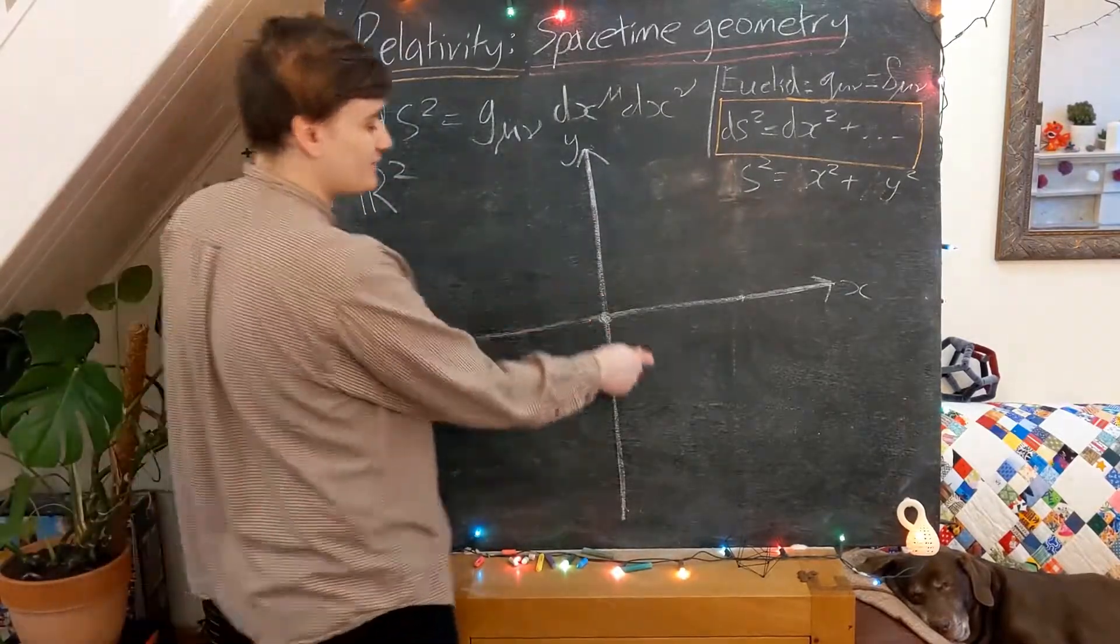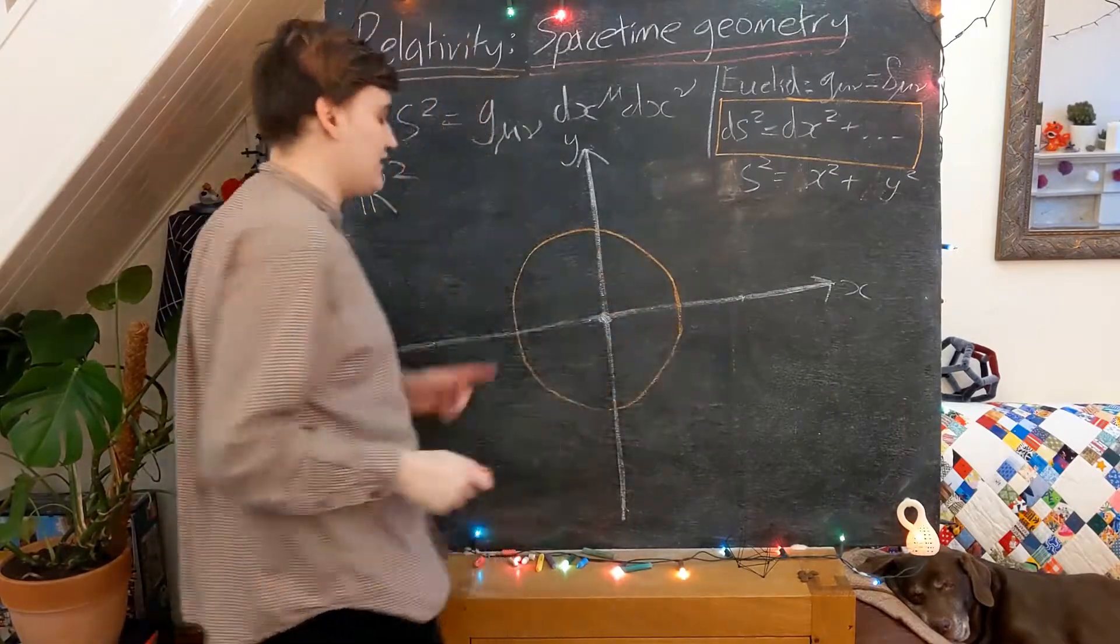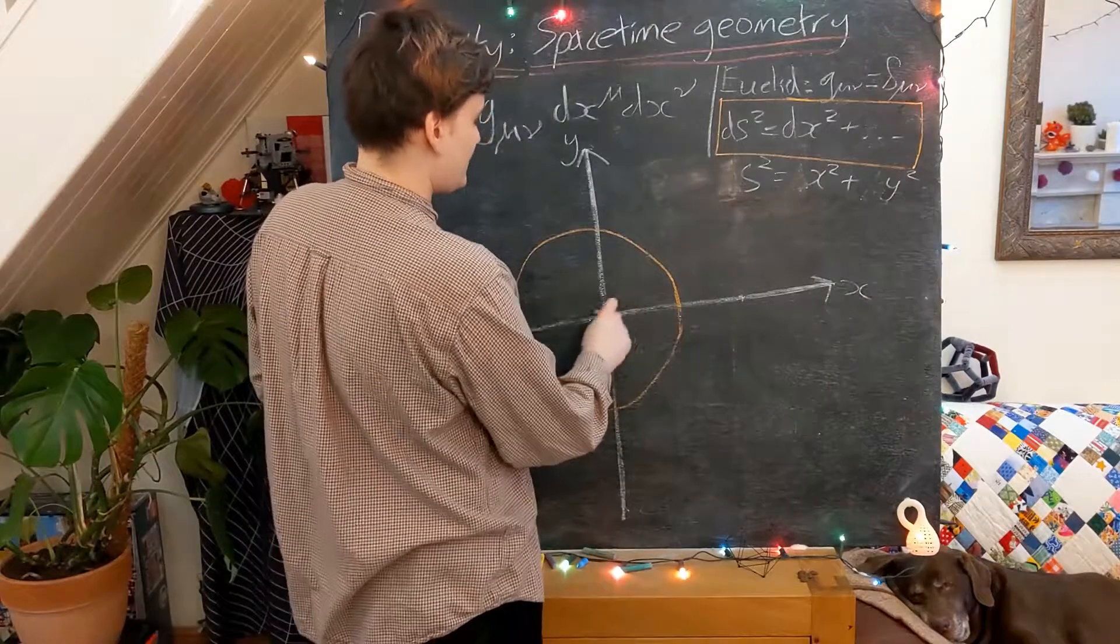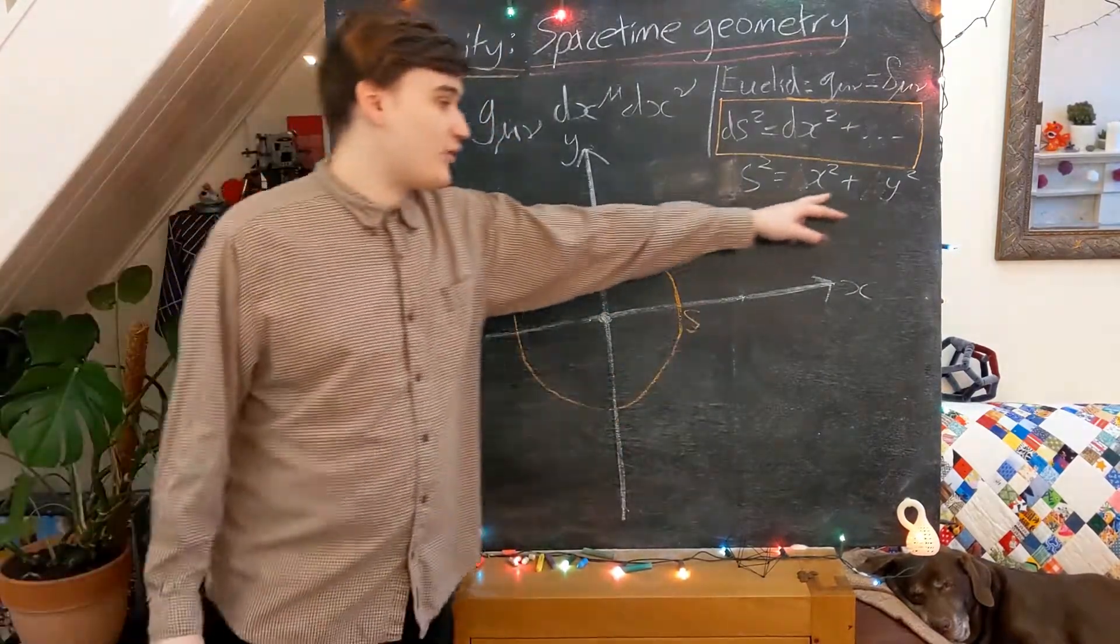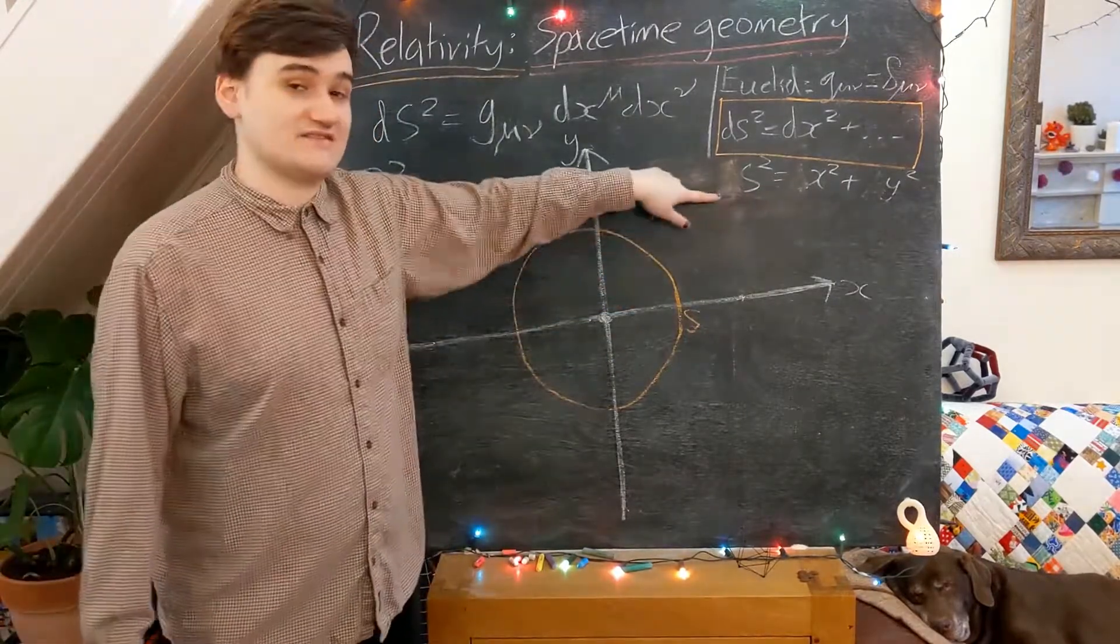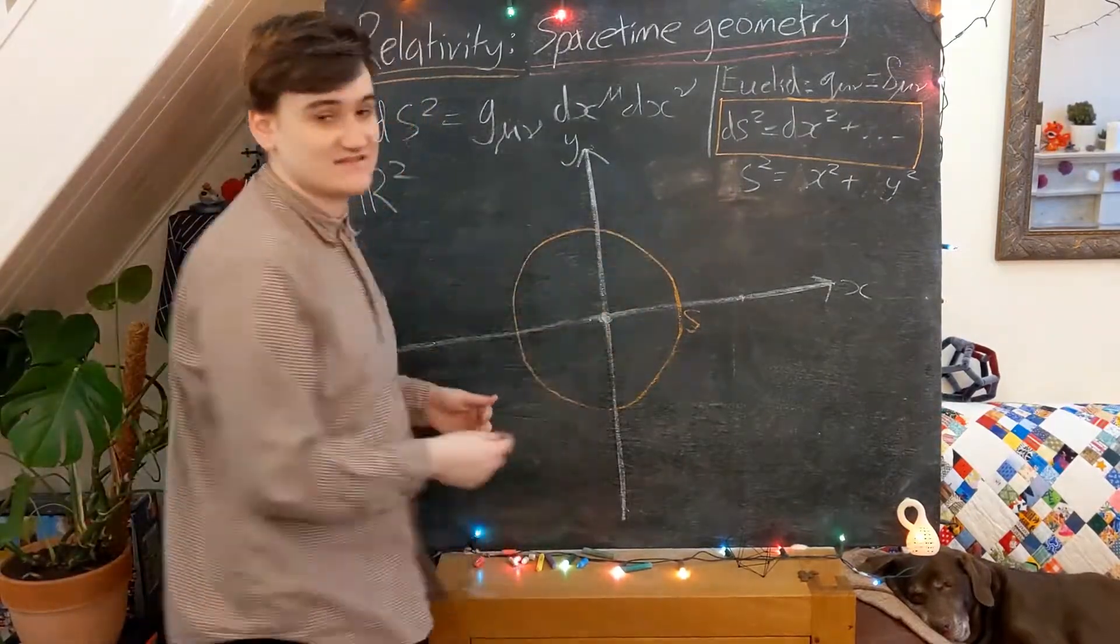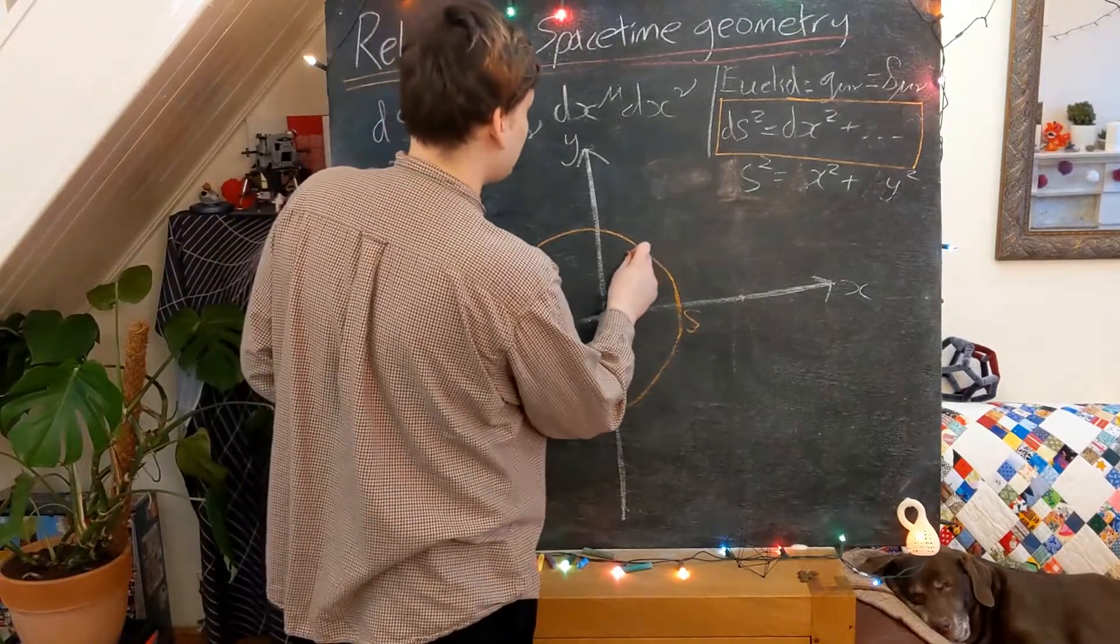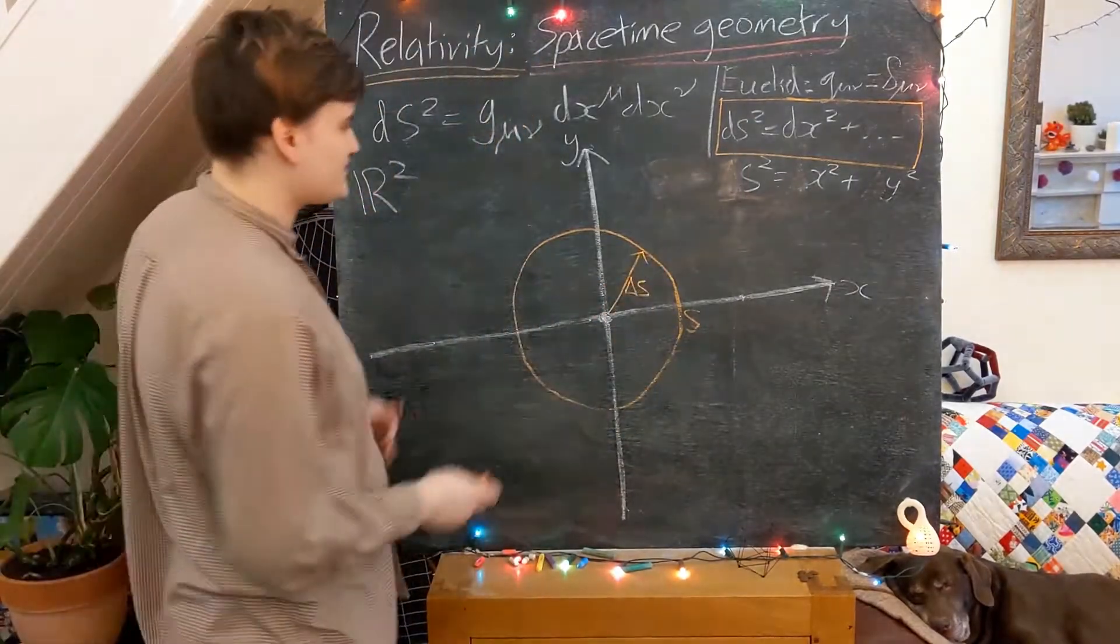Essentially at some distance s from the origin all of the points that lie on this orange circle which I've drawn here, this circle has some radius s, all of the points x and y that lie on this circle all have a constant distance s from the origin. Remember, this s is actually delta s, and it's effectively the distance from the origin.